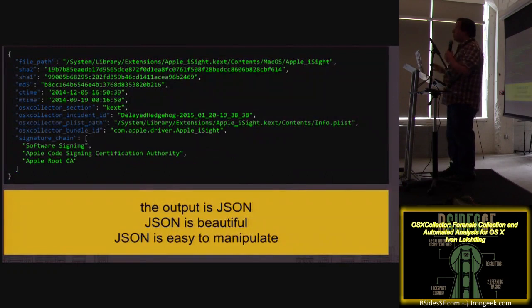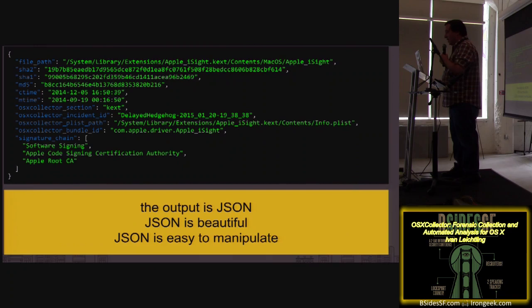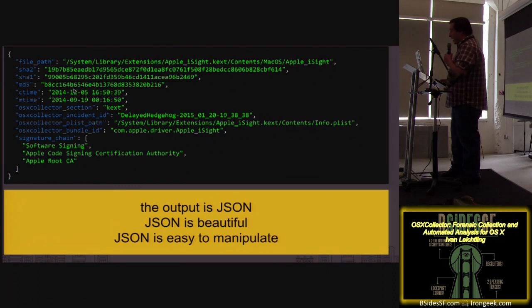All of the output of OSX Collector, when you untar gzip, is all just JSON. I actually and truly believe that JSON is kind of beautiful — if you go to json.org, on the right side there's a beautiful drawing of how JSON works and you can understand it. It's really easy to manipulate, integrates with our tools. This is sample output showing a single kernel extension — easy, beautiful JSON. We're going to keep using the tool chain to manipulate it.